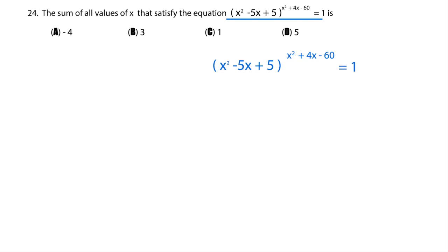So is there anything that we can do to simplify this? Well, if this is equal to a, and this is equal to b, this will look like a to the b is equal to 1.